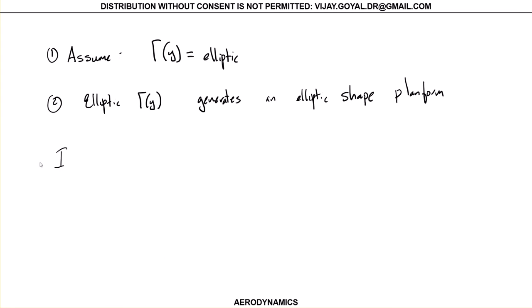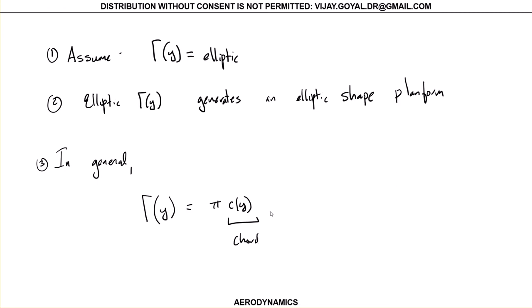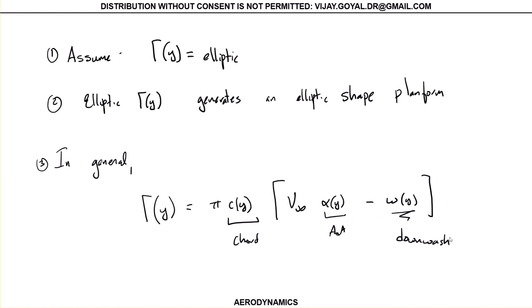In the most general case, you really will have something like this, where this is pi times the chord, times velocity, times the angle of attack — that's changing as I move along the span. This is the angle of attack minus w(y). This is called the downwash velocity. We will look into that equation in the next lecture.